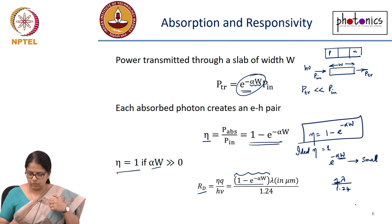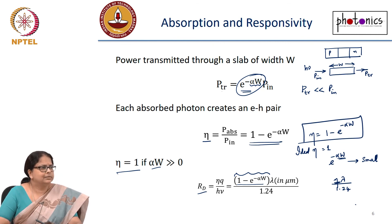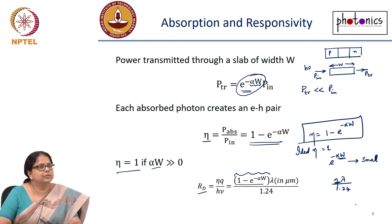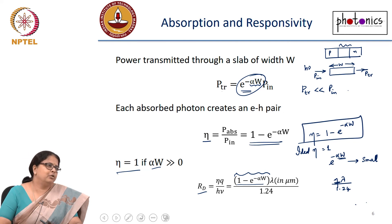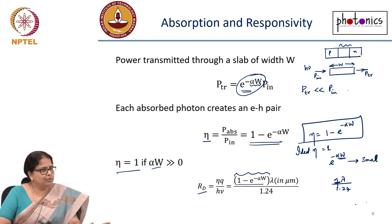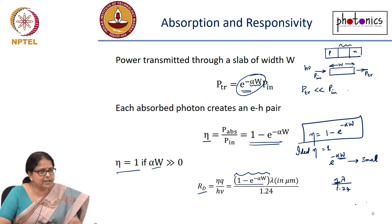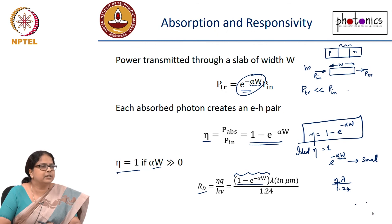To make η approach 1, the width W of the absorbing region must be large. In a p-n junction, this means the width of the depletion layer. You can increase the depletion width by increasing the reverse bias, but only up to the breakdown voltage. Beyond that you cannot increase the width further. So for a regular p-n junction, there is a fundamental limit on how large W can be made.